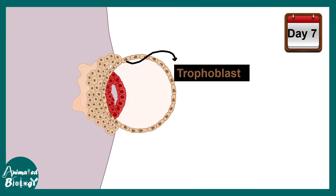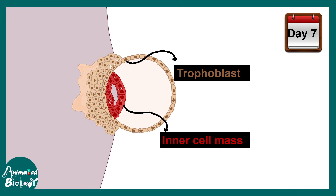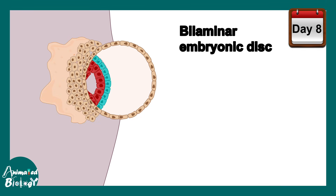Let's look at the layers of the blastocyst. The outer layer, shown in beige, is known as the trophoblast, and the red layer is the inner cell mass. The inner cell mass is the future embryo, while the trophoblast would provide supportive structures.